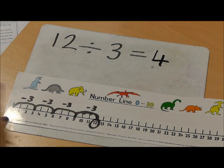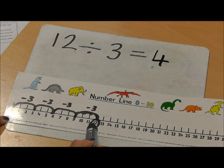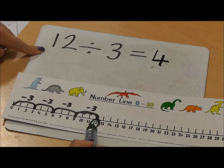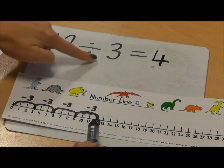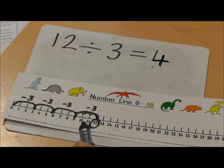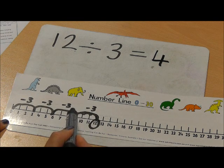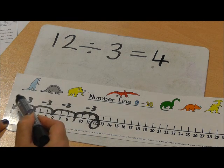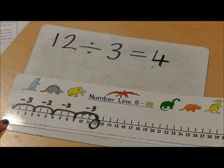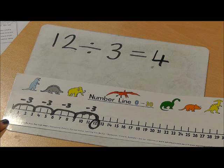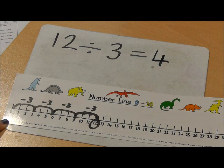So to recap, I started with my first number and then counted back in jumps of my second number. So 12 counting back in jumps of 3. And I have made 4 jumps. Therefore 12 divided by 3 equals 4.